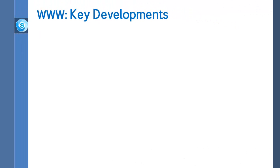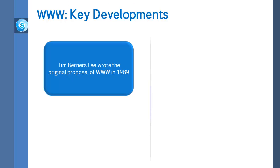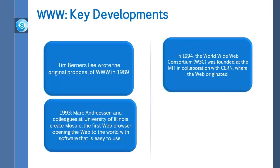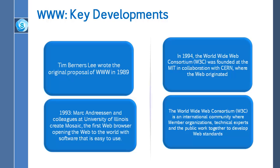Now let us talk about the key developments of the World Wide Web. Tim Berners-Lee wrote the original proposal of the World Wide Web in 1989. In 1993, Mark Anderson and his colleagues at the University of Illinois created Mosaic, the first web browser, opening the web to the world with software that is easy to use. In 1994, the World Wide Web Consortium was founded at the Massachusetts Institute of Technology in collaboration with CERN, the European Organization for Nuclear Research, where the web originated. The World Wide Web Consortium is an international community where member organizations, technical experts and the public work together to develop web standards.